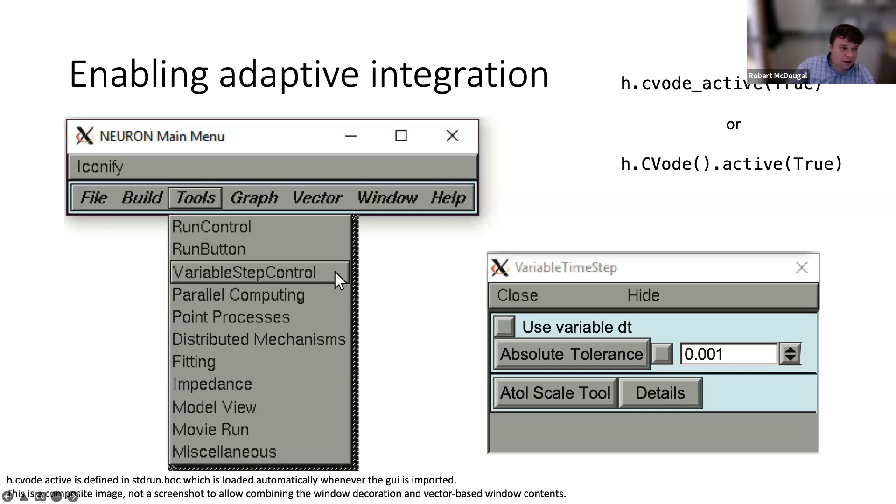On the Python side, if you have the graphical user interface loaded, you have a function called h.cvode_active() and pass in True to enable cvode. If you're not using the NEURON graphical interface, you can use h.cvode().active(True).